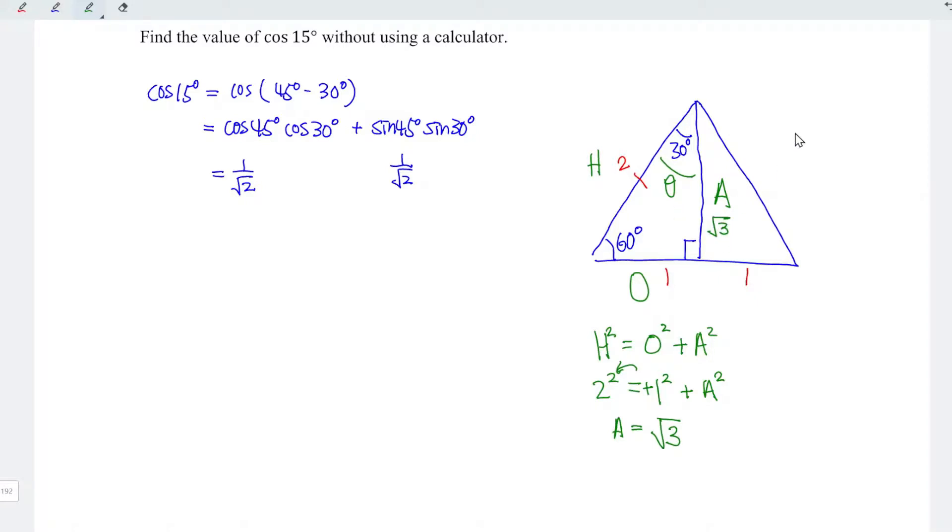And recall that cos θ equals adjacent over hypotenuse, sin θ equals opposite over hypotenuse. So which means that for this case, cos 30 degrees equals adjacent, which is square root of 3, divided by hypotenuse, which is 2. And for sin 30 degrees, opposite, which is 1, divided by hypotenuse, which is 2.